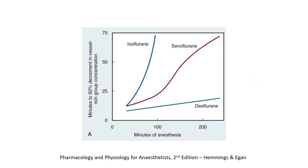You can see in this graph taken from the textbook by Hemmings and Egan that the curve for sevoflurane's 90% decrement time takes a sharp upward turn at about the two-hour mark, whereas for desflurane the curve remains flat. Following a typical anesthetic augmented by adjuvants like benzodiazepines and opioids, the 90% decrement time is much more instructive than the context-sensitive half-time insofar as time to emergence is concerned.